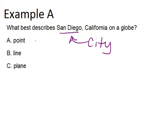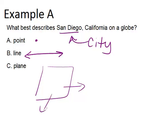So let's remember what those words mean. A point is like a dot. This would be a line that goes on forever. And a plane is a two-dimensional surface that goes on forever.